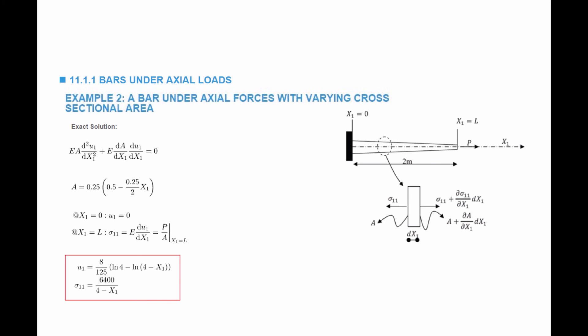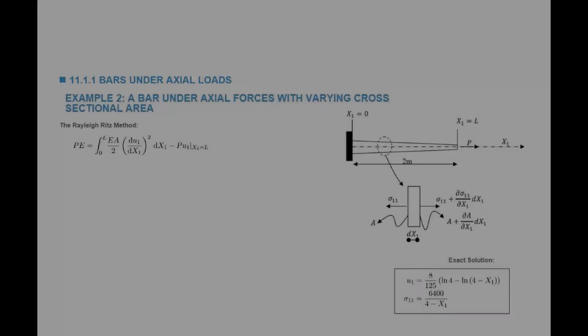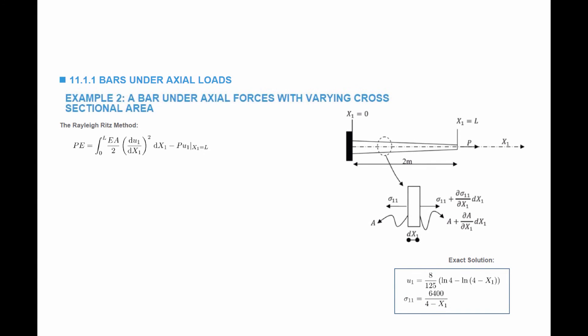The stress sigma11 is equal to 6400 divided by (4 minus x1), and the horizontal displacement u1 is equal to a logarithmic function. I'm going to put the exact solution aside and then try to find an approximate solution using the Rayleigh-Ritz method.